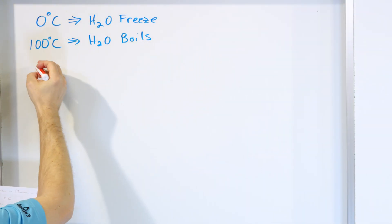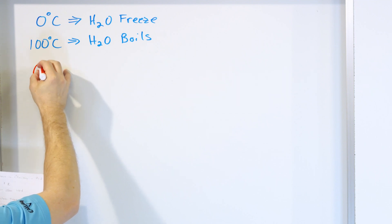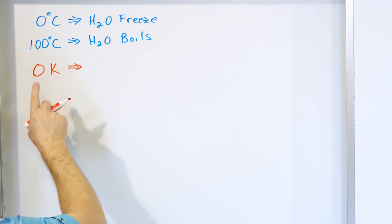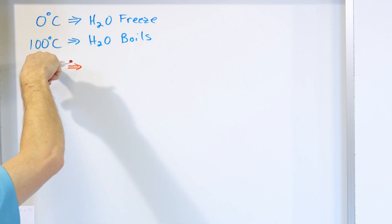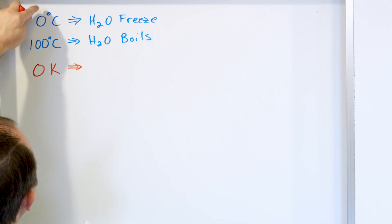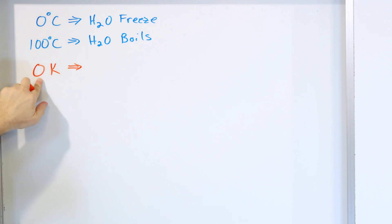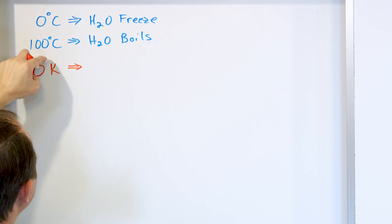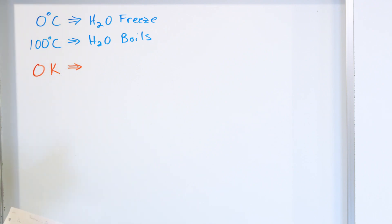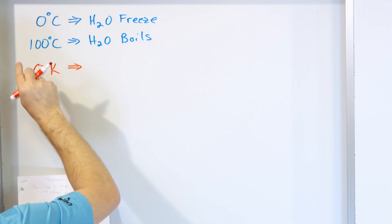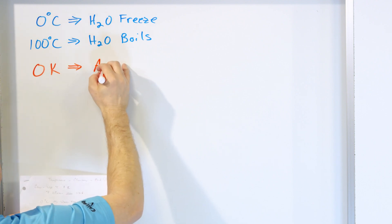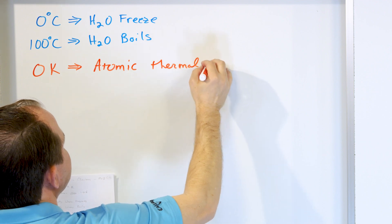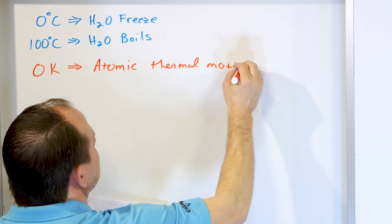But let's talk about the Kelvin temperature scale. Zero degrees Kelvin — now, I already made a mistake right there. We don't usually say zero degrees Kelvin. We don't put a degree marking there. It's just by convention. We put the degree marking for Celsius and Fahrenheit, but when we talk about Kelvin, we just don't put the little degree marks. So even though I said degrees Kelvin, you don't really say the word degree. And at zero Kelvin, atomic thermal motion stops.